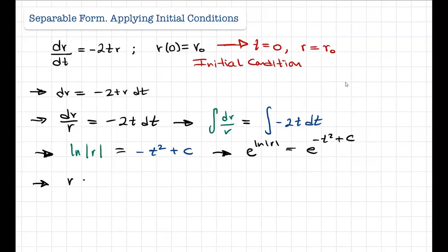So solving that, we're going to get the exponential and the natural log cancel. We're going to get r is equal to e to the negative t squared times e to the C, which we can of course rewrite. And then we're going to get our answer here to be r as a function of t is equal to—this e to the C—we can change into capital C, so this will be C e to the negative t squared.